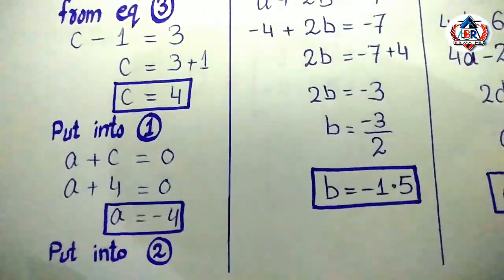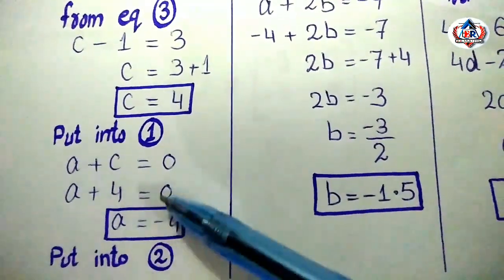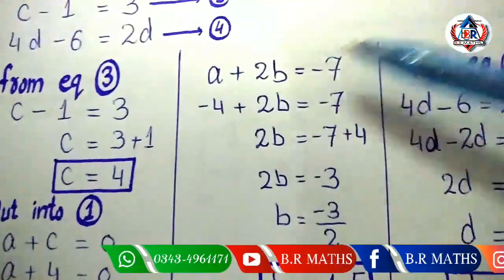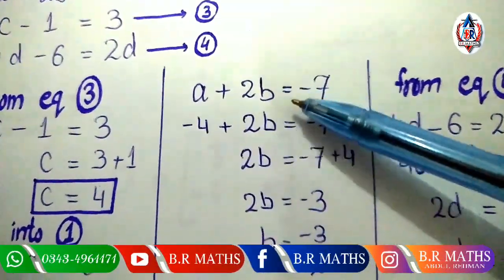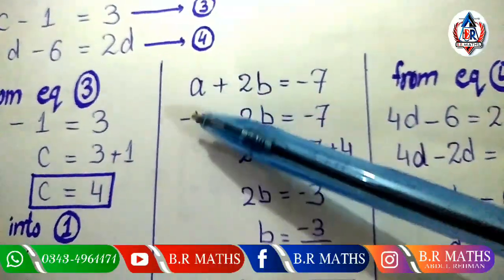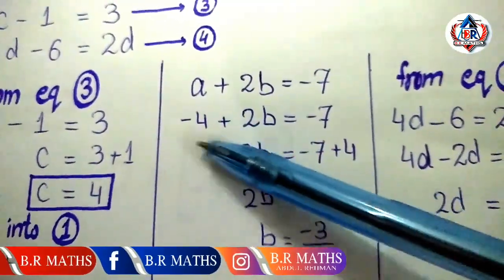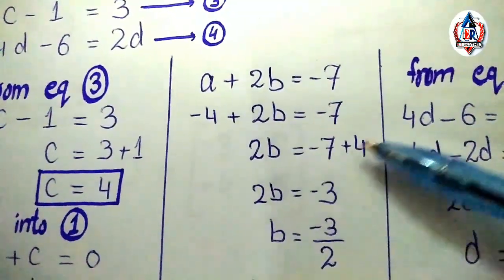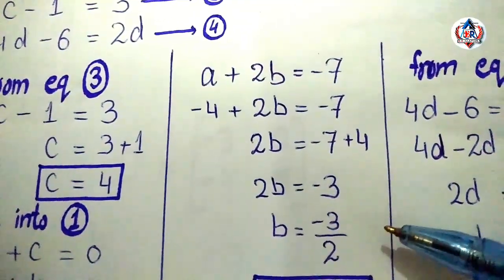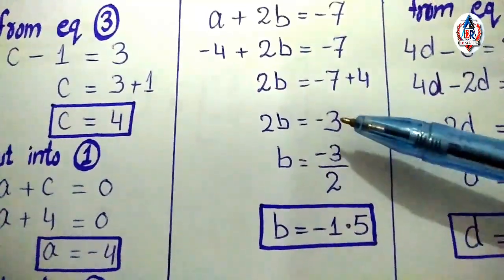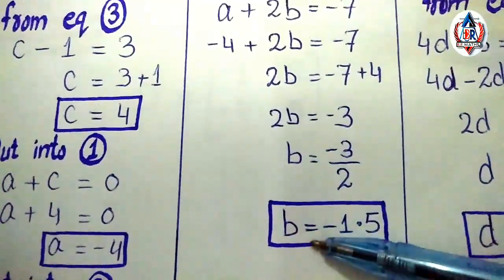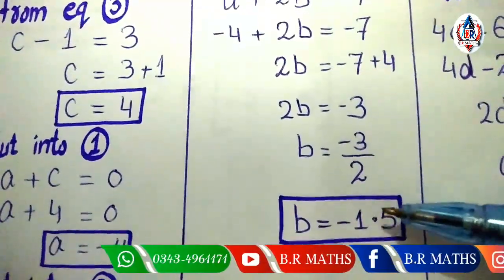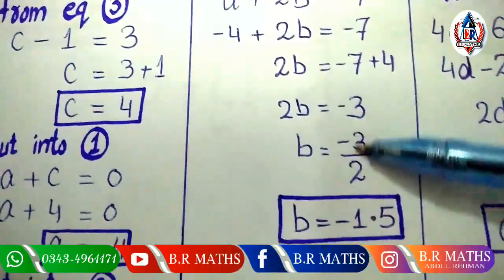Now put into equation number 2 this value of a, and you can easily find the value of b. Equation 2 is a plus 2b equals minus 7, and the value of a is minus 4. Minus 4 becomes plus 4 when moved from left to right. Minus 7 plus 4 equals minus 3. 2 multiplied becomes divide: minus 3 divided by 2. The value of b equals minus 3/2 or minus 1.5. You can use both values as a result.